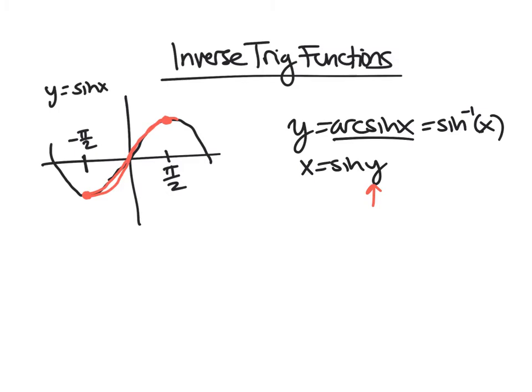So just an example. So arc sine of 1, for instance, is going to be pi over 2. Why? Well, sine of pi over 2 is 1. And arc sine is saying, what angle do I plug in to sine to get 1? It's going to be pi over 2.